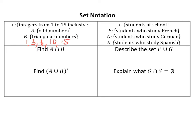A and that intersection symbol is the intersection of A and B. So anything that is both odd and triangular, so that would be 1, 3, and 15 for that one.